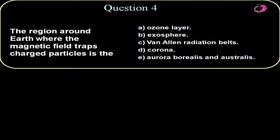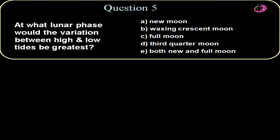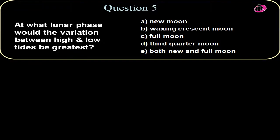So the Earth traps these particles in these Van Allen radiation belts. Question number five, at what lunar phase would the variation between high and low tides be greatest?